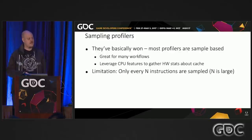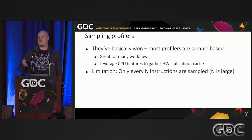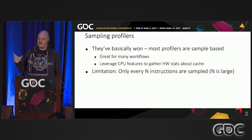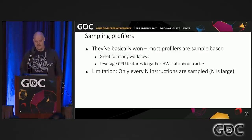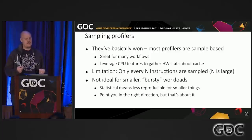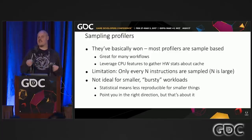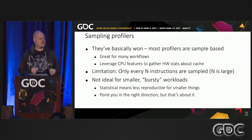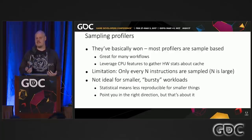But that's a big but — they have a big limitation. They interrupt your program every so often, every N instructions, and that N is pretty big. Even if you try to make it smaller, there's quite a big gap. So if you have something you're curious about — why is this taking half a millisecond? You suspect something bad is going on, but it just pops in two or three samples, and that's essentially useless.